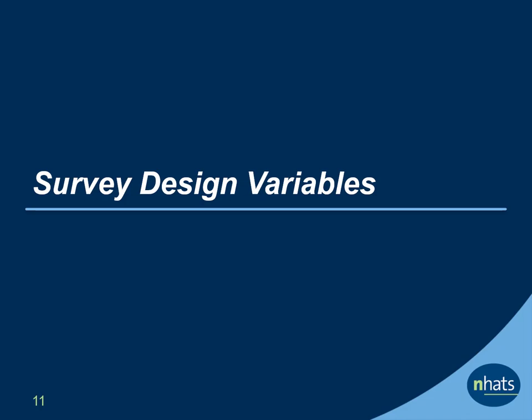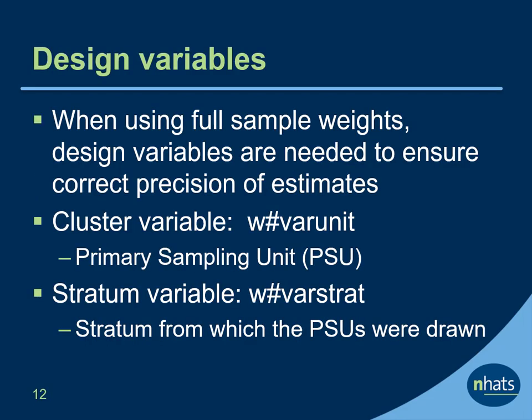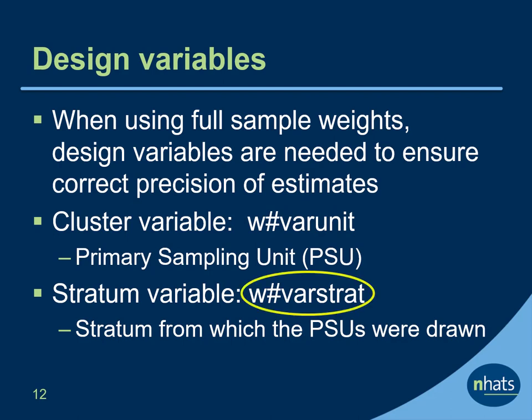Next, let's take a look at NHATS survey design variables. For analysts using the full sample weights, survey design variables should be specified to ensure that standard errors and other measures of precision are unbiased. Each round, two variables are included for this purpose. VAR_UNIT is the cluster variable indicating primary sampling unit or PSU, and VAR_STRAT indicates the stratum from which the PSU was drawn. Let's take a look at an example of how to specify the design variables with a full sample final analytic weight.